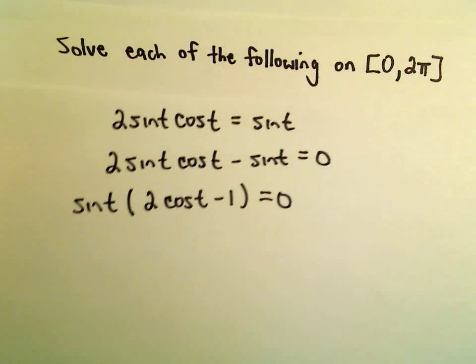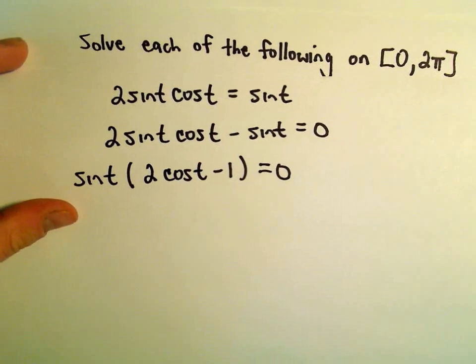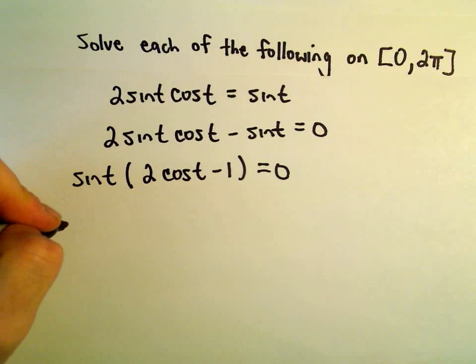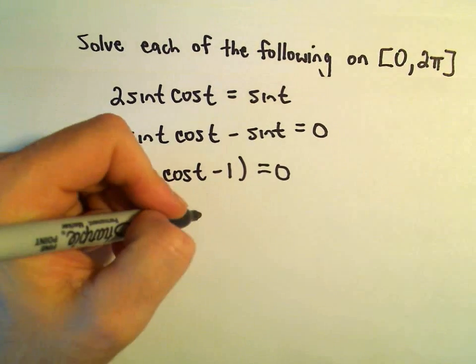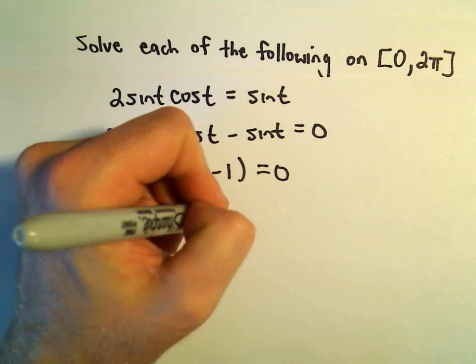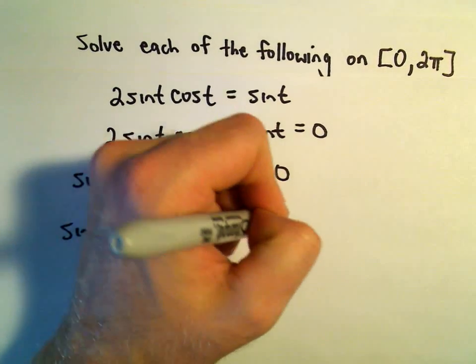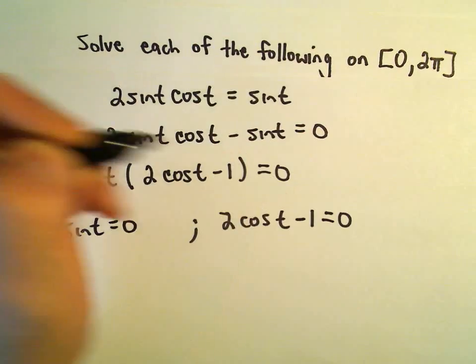And now all we have to do is simply just take each factor and set it equal to 0. So we'll set sine of t equal to 0. We'll take 2 cosine t minus 1 and set that equal to 0.